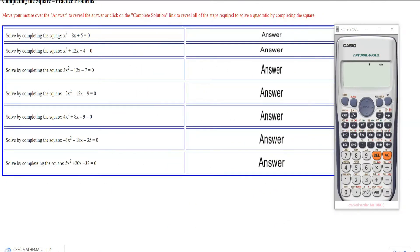So if you look right here, it says solve by completing the square: x² - 8x + 5 = 0. So we want to solve this by completing the square.